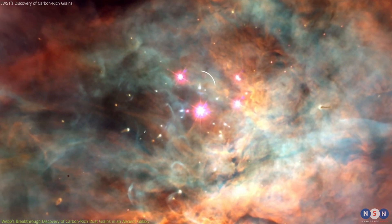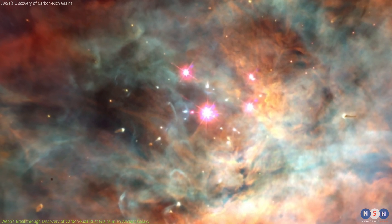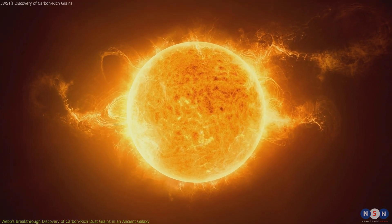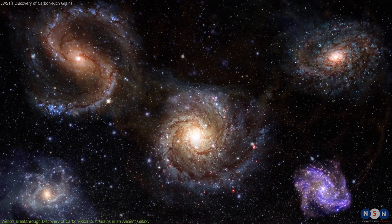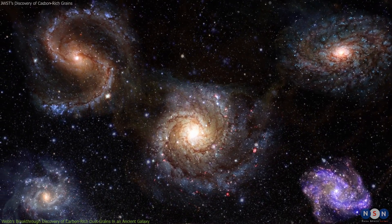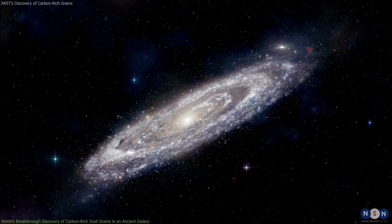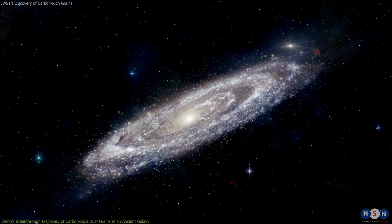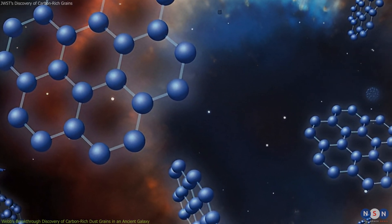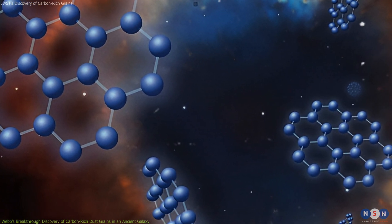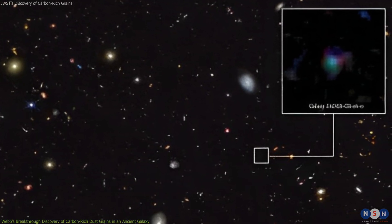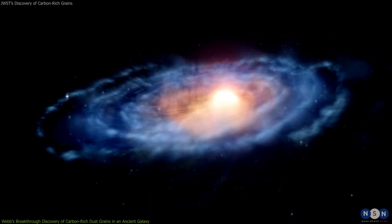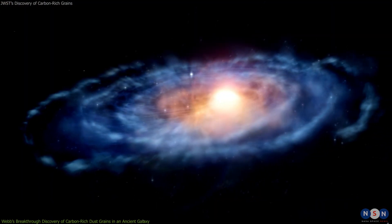Second, it suggests that this galaxy has a lot of star formation activity going on, which is necessary to create and heat up PAHs. However, most galaxies in this epoch are expected to be small and faint with low rates of star formation. Third, it challenges our understanding of how PAHs form and survive in space. PAHs are fragile molecules that can be easily destroyed by ultraviolet radiation or shocks from supernova explosions. However, the observed galaxy seems to have enough PAHs to emit strongly at 6.2 micrometers.